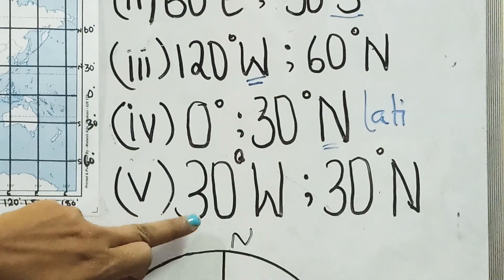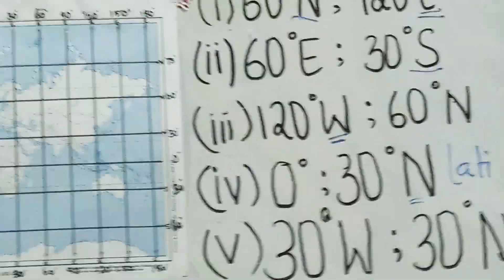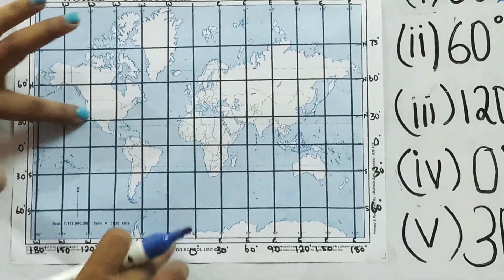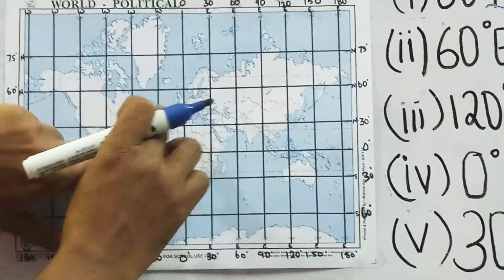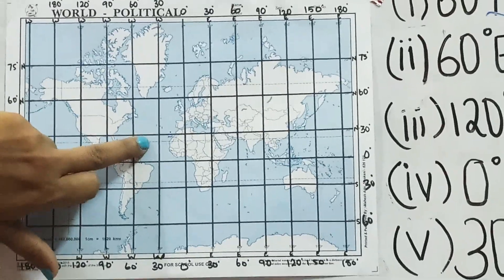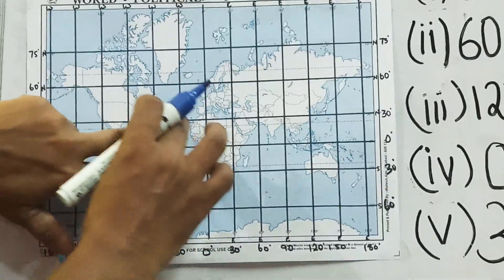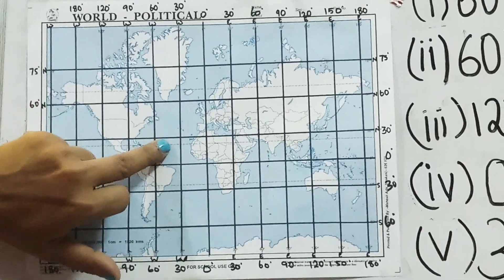The fifth coordinate: 30 degree west and 30 degree north. 30 degree west is here and 30 degree north is here. When these two lines meet, the destination falls in the ocean — the Atlantic Ocean.